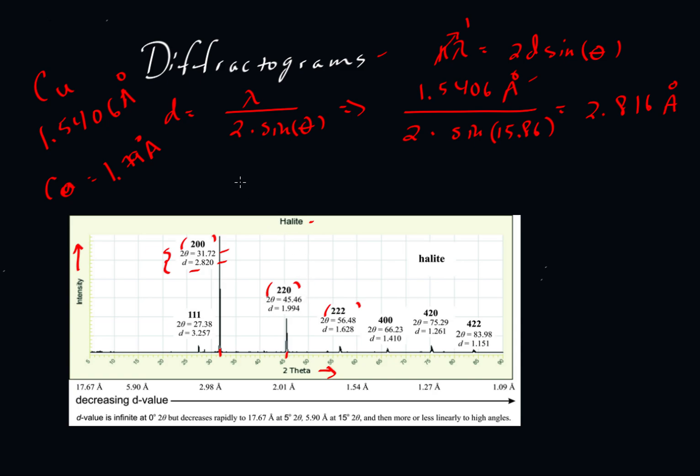Let's do the same thing for the 220. We'd have a d spacing here that would be equal to 1.5406 angstroms, and then that would be divided by 2 times the sine of half of 45.46, so 22.73 degrees. And when I do that calculation, I get the value of 1.994 angstroms. So that would be the distance of those layers of atoms that are represented by the direction 220. And that's exactly what Dexter Perkins reports here.